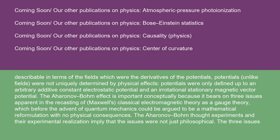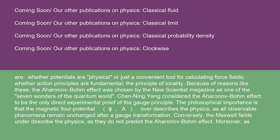The Aharonov-Bohm effect is important conceptually because it bears on three issues apparent in the recasting of Maxwell's classical electromagnetic theory as a gauge theory, which before the advent of quantum mechanics could be argued to be a mathematical reformulation with no physical consequences. The Aharonov-Bohm thought experiments and their experimental realization imply that the issues were not just philosophical. The three issues are whether potentials are physical or just a convenient tool for calculating force fields, whether action principles are fundamental, the principle of locality. Because of reasons like these, the Aharonov-Bohm effect was chosen by the New Scientist magazine as one of the seven wonders of the quantum world.